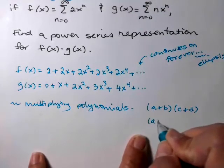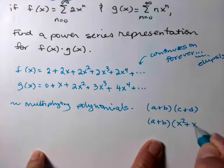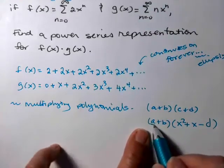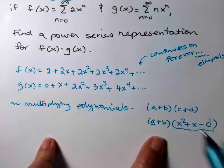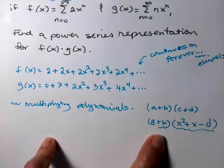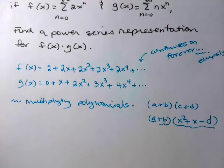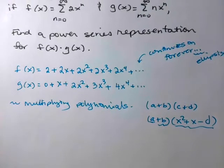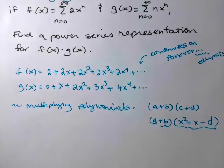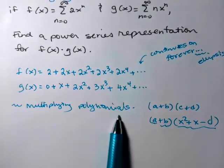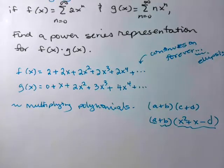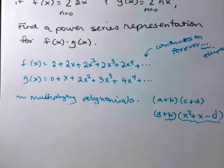But if you have a binomial times a trinomial, then you have to take the first term, multiply it by everything in the second, take the second, take the b, multiply through the second, and then combine your like terms. So that's what you need to be thinking about for this one. We'll start writing out a few and see if we can find that pattern.